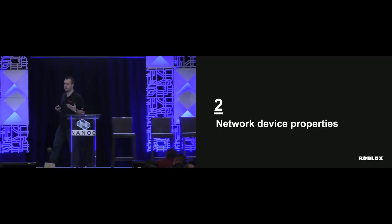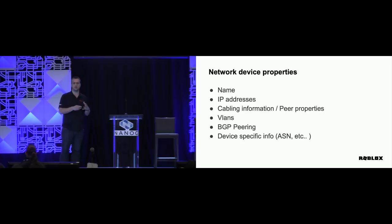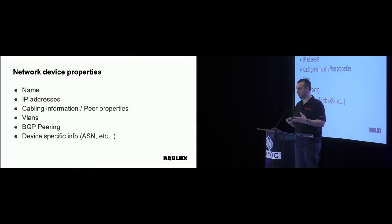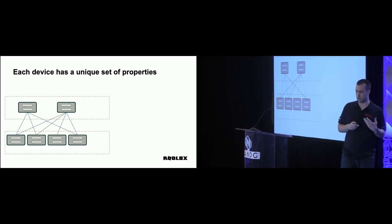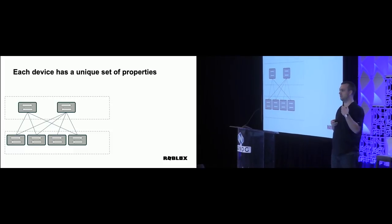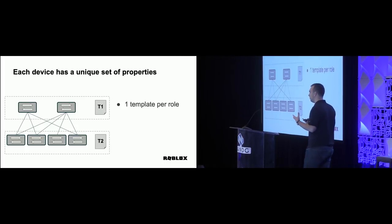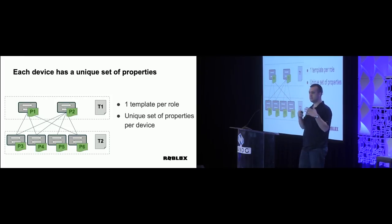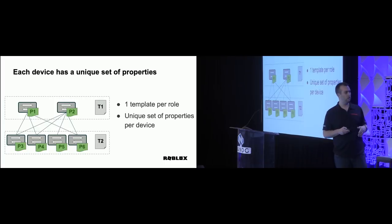So let's look at what network device properties are — what I mean when I talk about that. For me, it's everything that is truly unique to a device: the name, all the IP addresses, the cabling, all the services, BGP sessions, anything that is really specific to a device. Our industry has done a lot of work automating configuration templating. We now have a small number of templates we use per role. But we've really just pushed the problem somewhere else, because we still have to manage a set of unique device properties for each individual device.